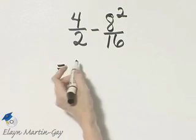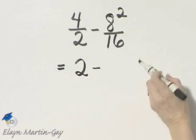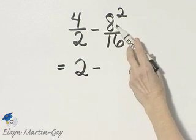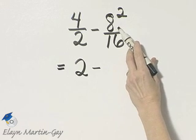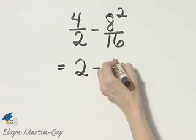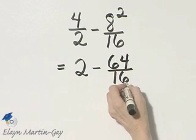4 divided by 2 is 2 minus... now first we need to evaluate this expression in the numerator, 8 squared, because that's an exponential expression. 8 squared is 8 times 8, and that is 64 over 16.